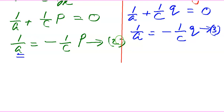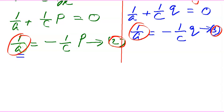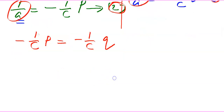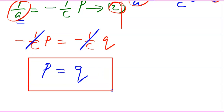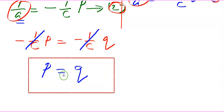Equating equation 2 and equation 3: −(1/c)p = −(1/c)q. Dividing both sides by −(1/c), we get p = q. Now the arbitrary constants a and c are eliminated. Therefore, the required partial differential equation is p = q. If you feel the video helpful, please subscribe to the channel for upcoming videos.